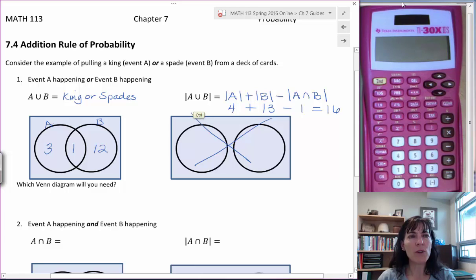The cardinal number for the union is 16. And we can see it here if we take the 12, 13, 14, 15, 16. That is 16 cards in our union.